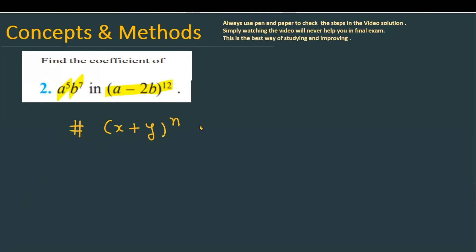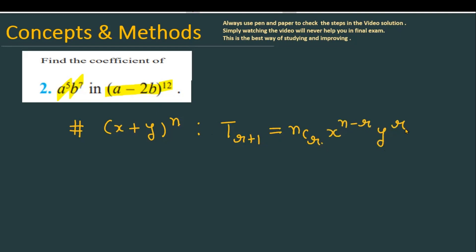— then for a general term required, the general term T(r+1) is given by nCr, multiplied by x raised to the power (n minus r), and y raised to the power r.